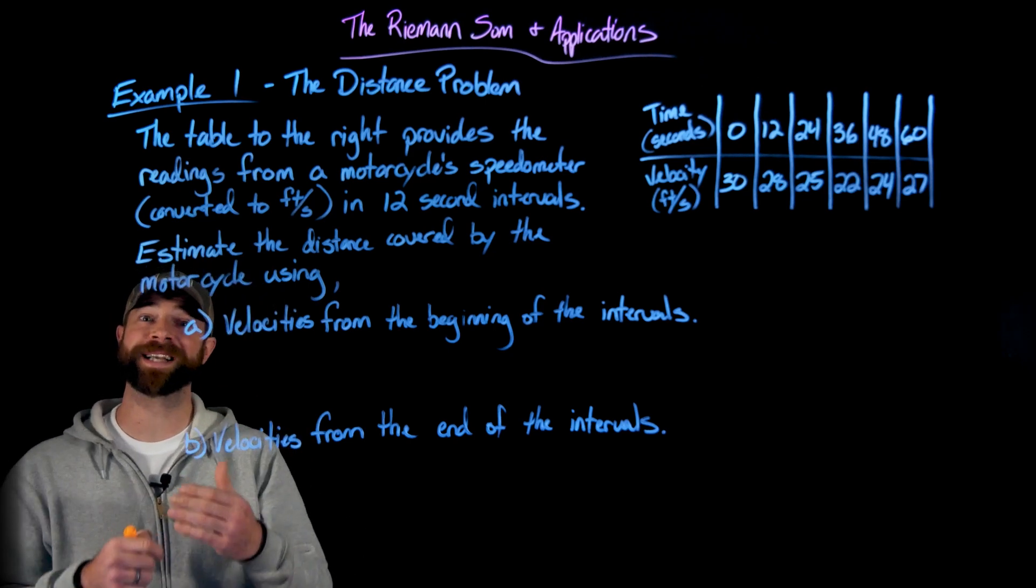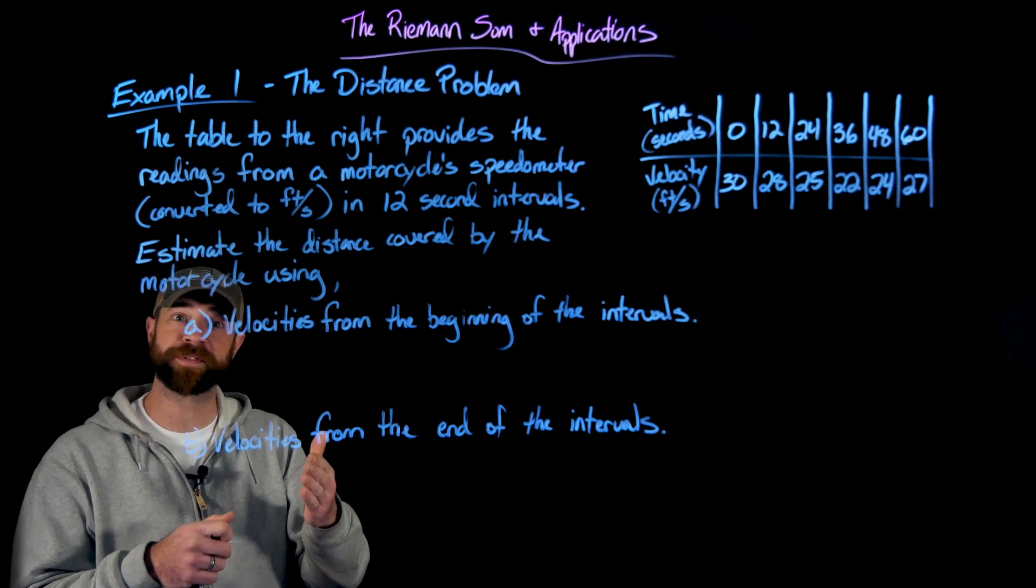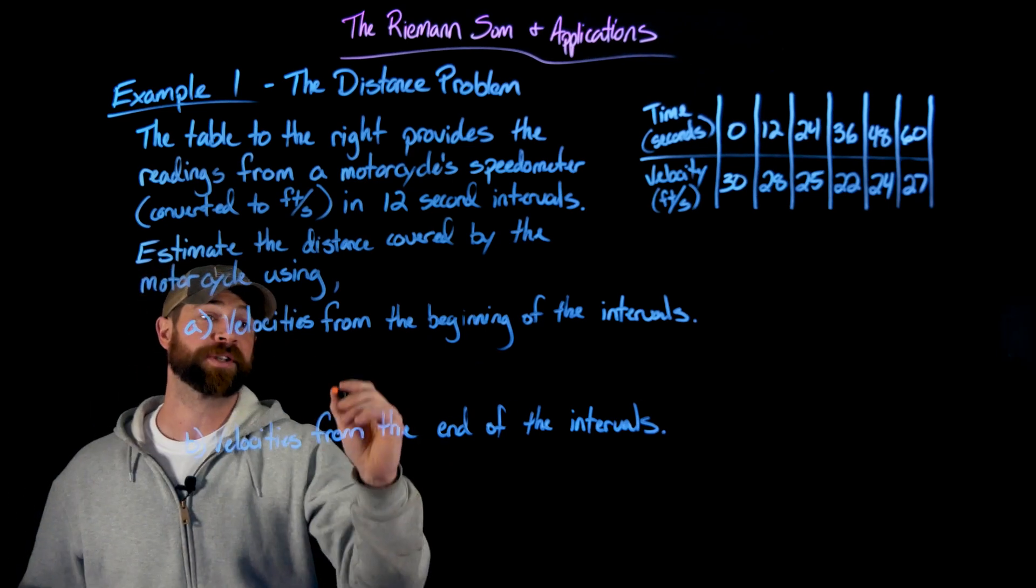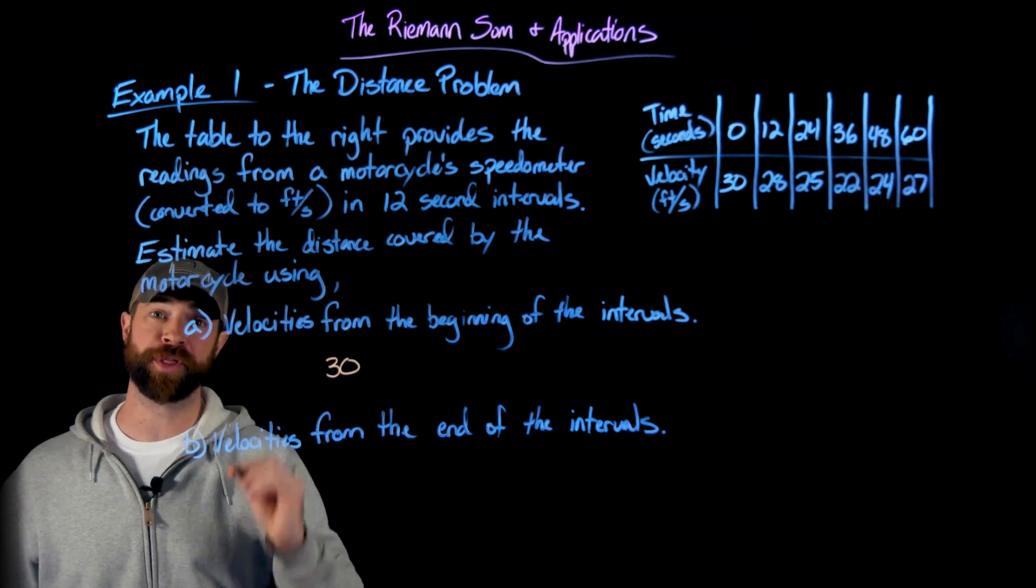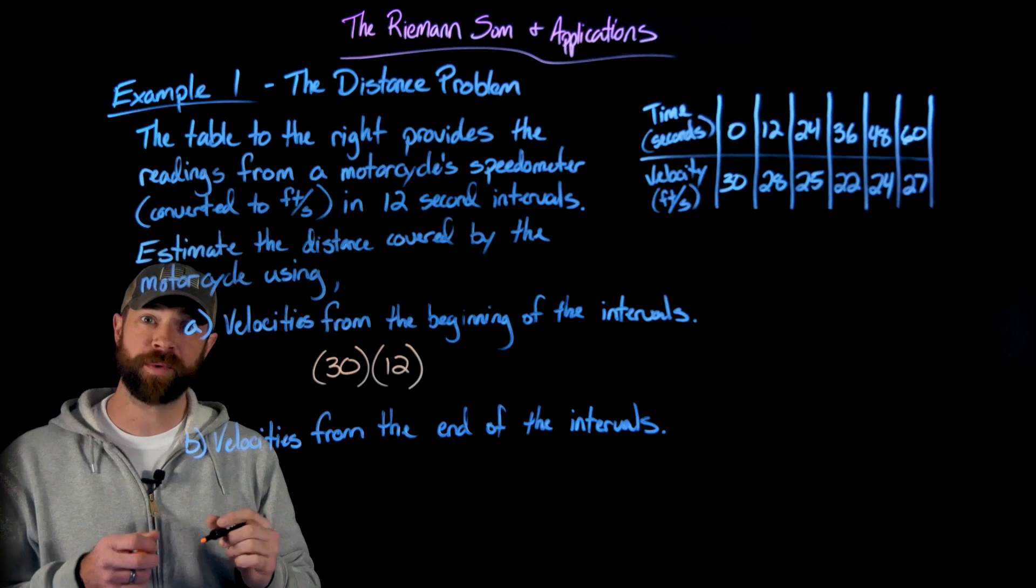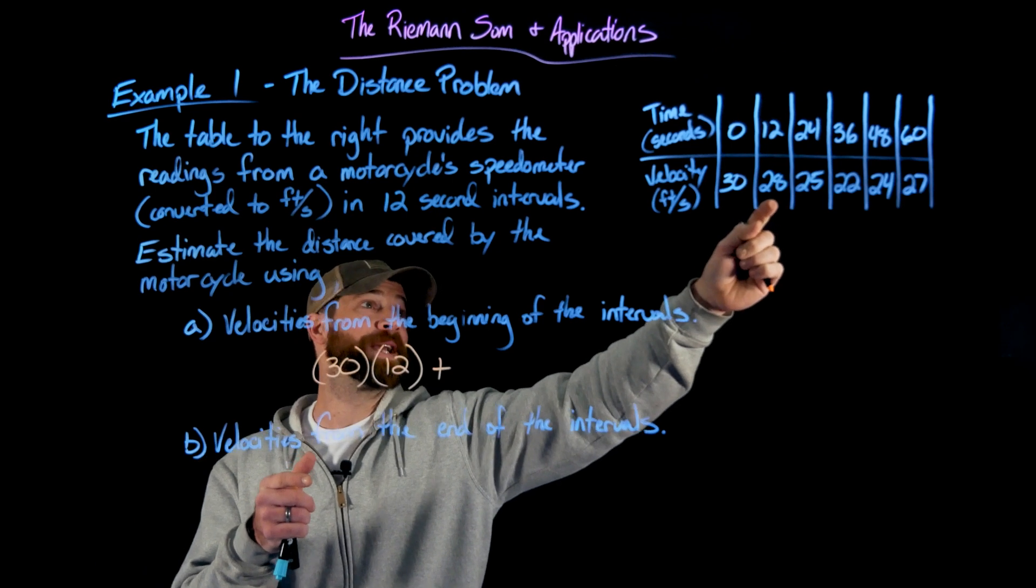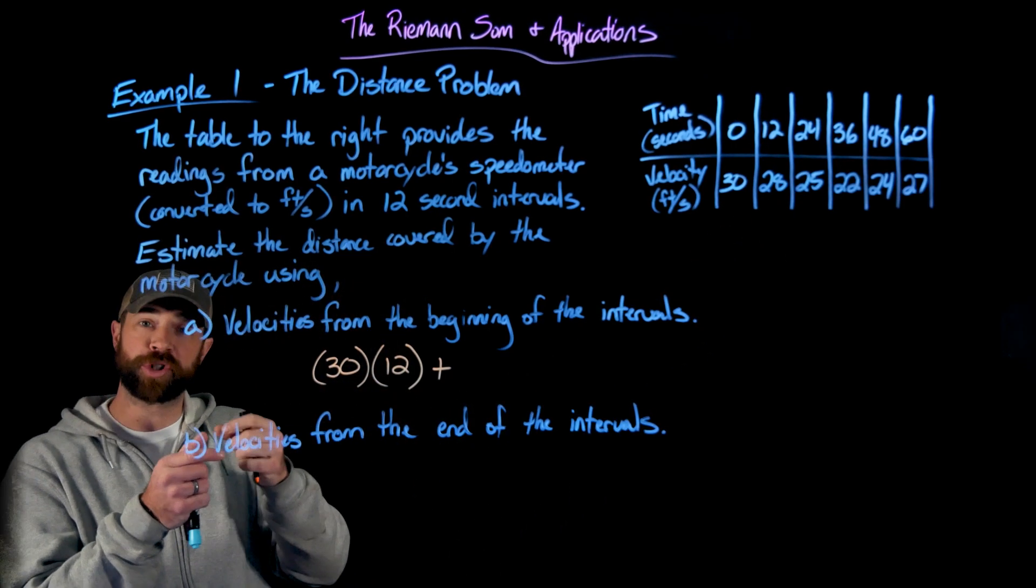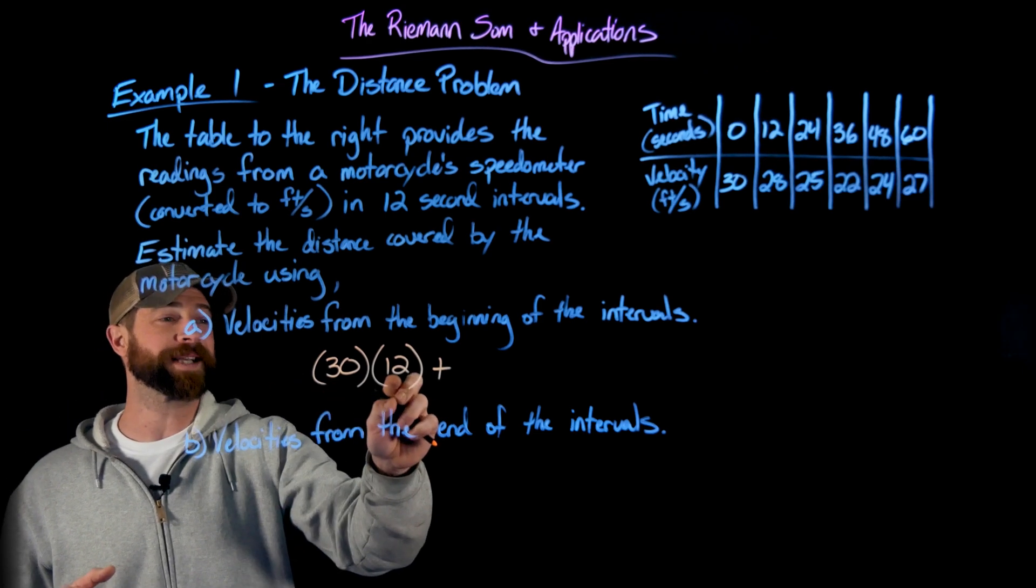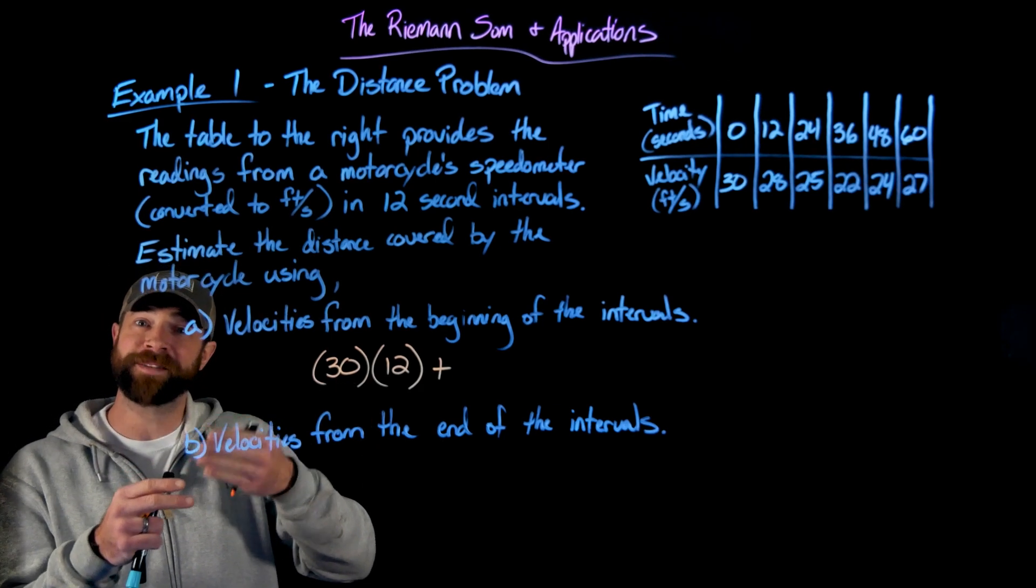So what I'm going to do for the first part is I'm going to assume this motorcycle is going 30 feet per second for the whole first 12 seconds here. And so what I'm going to do is use that velocity and multiply it by the length of time. So I have for the first interval, I have this motorcycle is going 30 feet per second, and it goes for that long for 12 seconds. And then what I'm going to do is do the same thing for each of the intervals. For the next interval, I'm going to take the 28 feet per second and multiply it by the length of that interval. Again, this is that delta x, right? The length of the interval by 12 seconds. So this will stay constant through each of these terms. I'm going to, in this case, just use the velocity from the beginning of the interval.